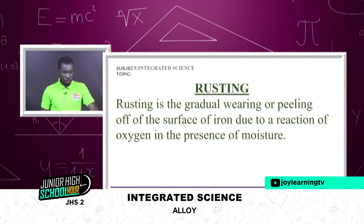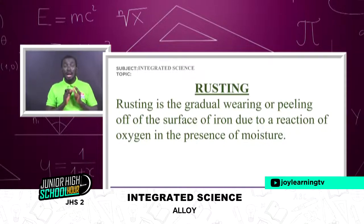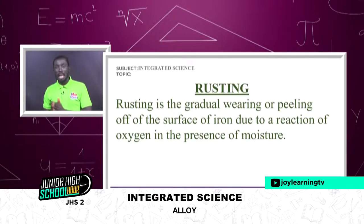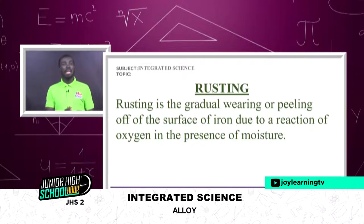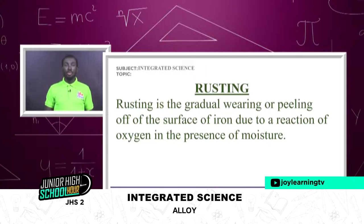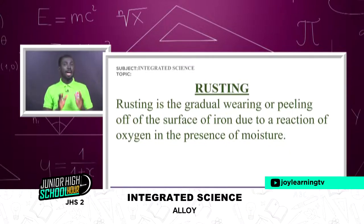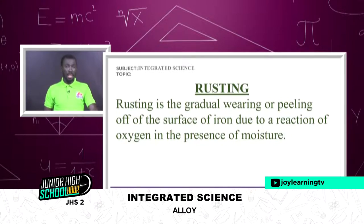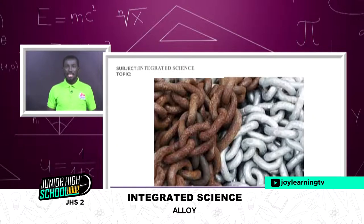Now what is rusting? Rusting is the gradual wearing or peeling off of the surface of iron due to the reaction of oxygen in the presence of moisture. Rusting will always occur when there is iron, water, and air. With corrosion, any metal can undergo it, but rusting specifically refers only to iron. So if the metal is not iron, we say it's corroding; if it is iron, we say it is rusting.